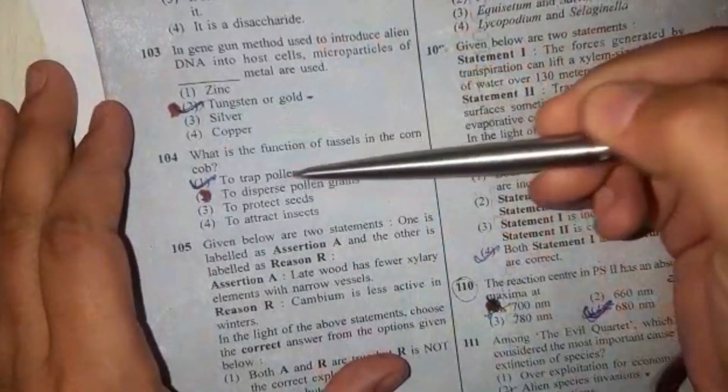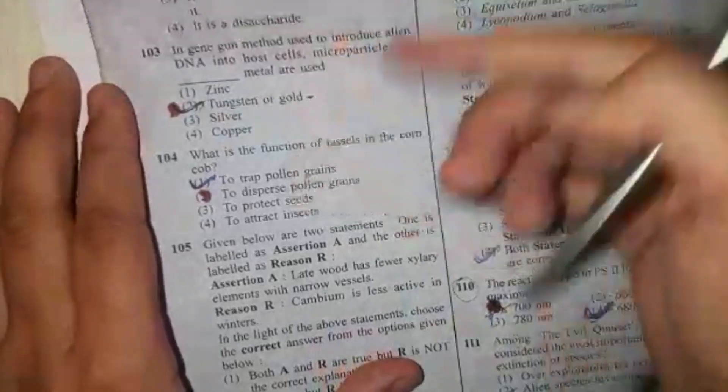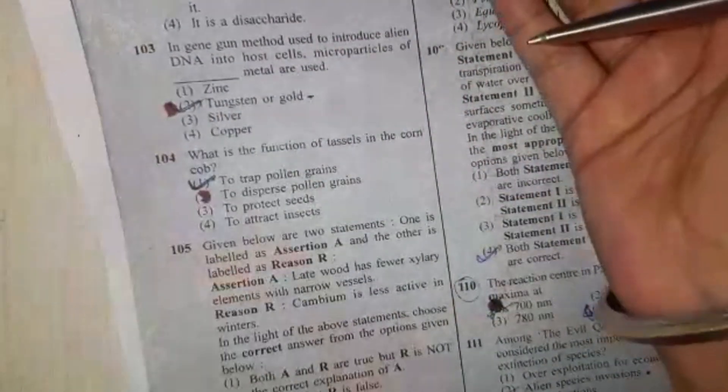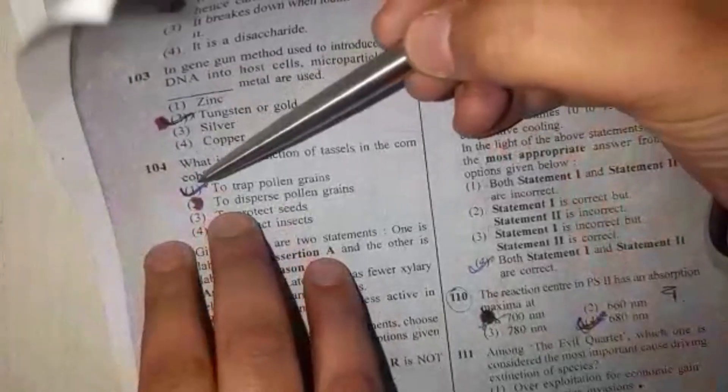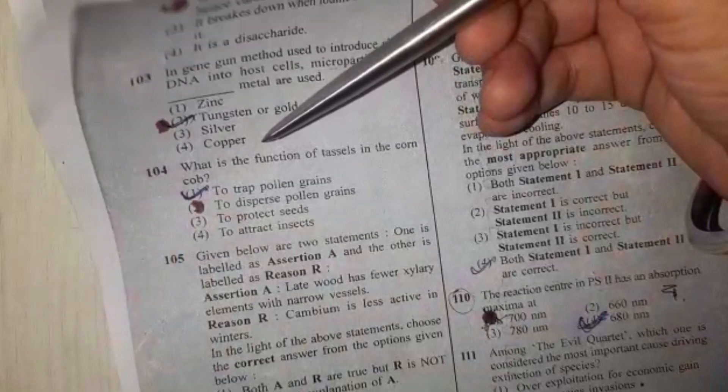Next question is: What is the function of tassels in the corn cob? The tassels are the hair-like structures in the corn cob. They work to trap pollen grains, similar to how a stigma works.